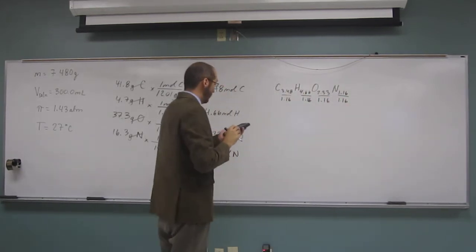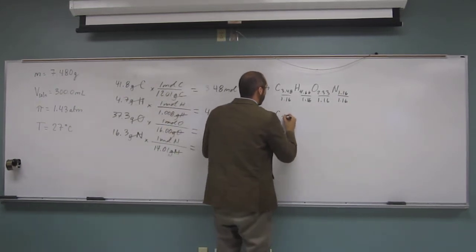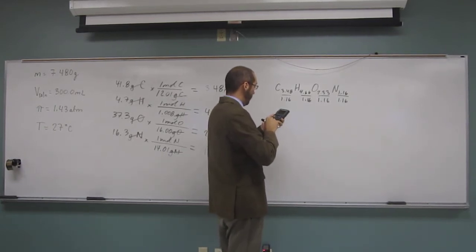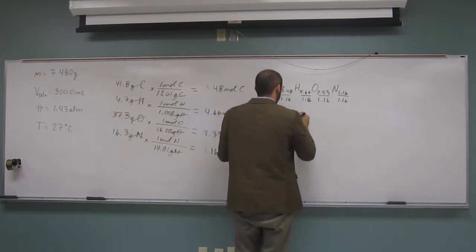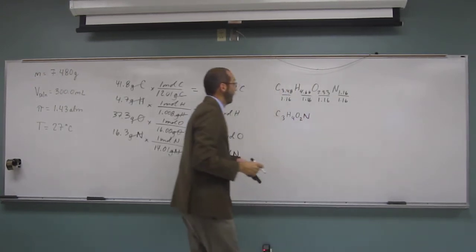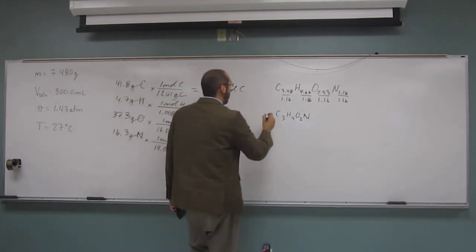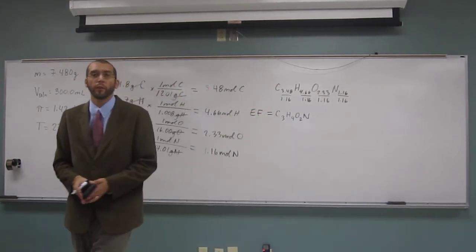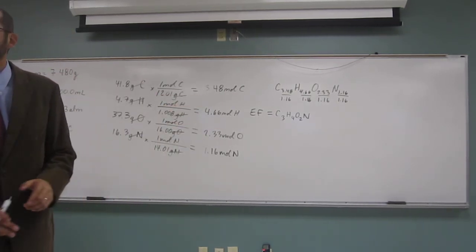Dividing each by 1.16 gives us approximately C: 3, H: 4, O: 2, and N: 1. That gives us the empirical formula C3H4O2N. If you don't recall how to do that, remind yourself — that's how to calculate the empirical formula.